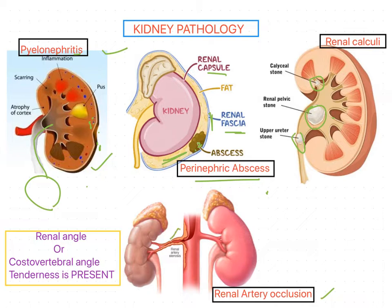Another condition is renal artery occlusion — the complete blockage of blood flow through one or both of the renal arteries and their branches. This occlusion is mainly due to a thrombus, emboli, or atherosclerosis. In this condition also, the renal angle test is positive.